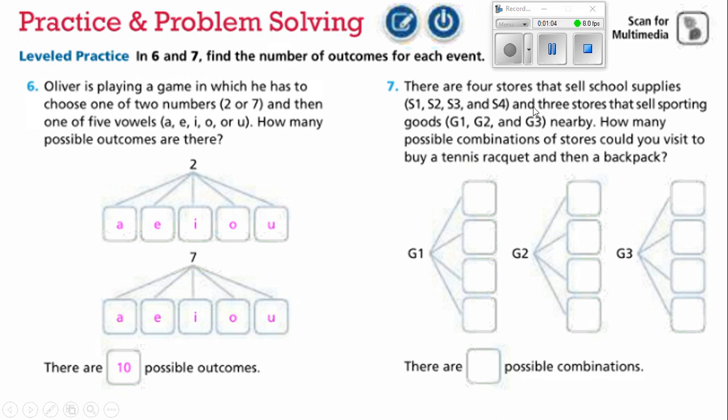Number 7 says there are four stores that sell school supplies, S1 store number 1, store number 2, store number 3, and store number 4, and three stores that sell sporting goods. How many possible combinations of stores could you visit to buy a tennis racket and then a backpack?